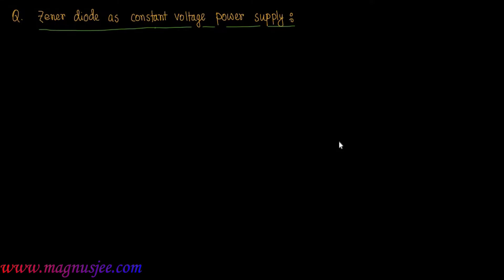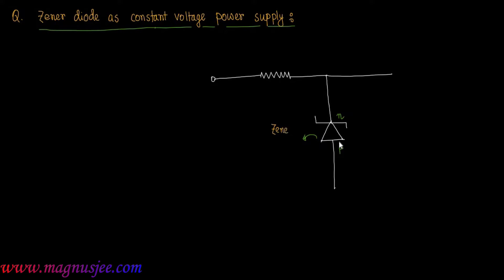A Zener diode is one type of PN junction diode — a reverse-biased PN junction diode. There is an input resistance connected in series combination with the Zener diode. Here we can draw the Zener diode: this side is the P-side and this side is the N-side. This is a Zener diode — a reverse-biased diode.